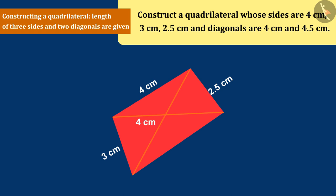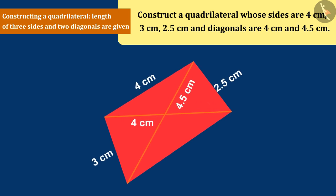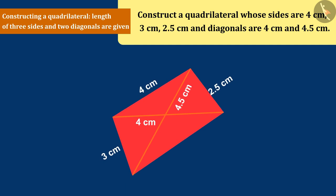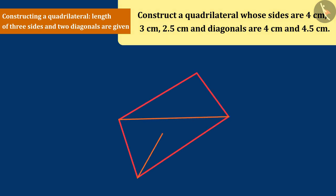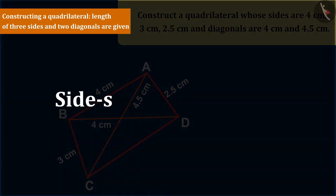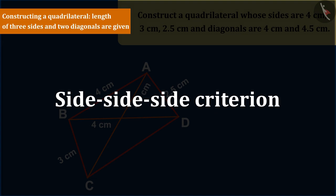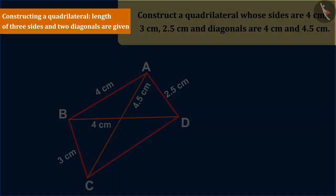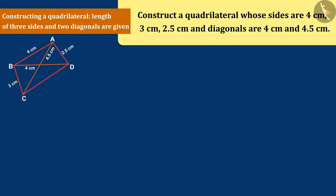Since Arav has learned to construct such a quadrilateral in his class of practical geometry, first Arav constructs a rough shape ABCD that looks something like this. Now he constructs triangle ABD in this way using the side-side-side criterion. For this, first he draws a line segment BD equal to 4 cm.